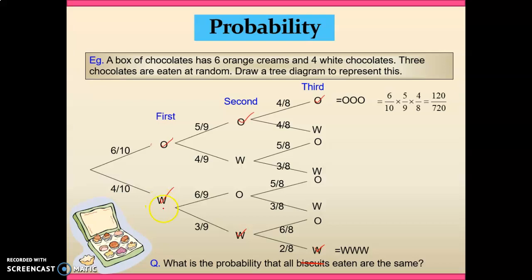Doing a similar thing for our white chocolates, if we were to eat a white, followed by a white, followed by a white, we would have 4 on 10 by 3 on 9 by 2 on 8, giving us a total chance of 24 on 720. So what's the probability that all chocolates eaten are the same? Well, we know it could have been this option or this option. But to have the combination of the two, we simply add those two together.